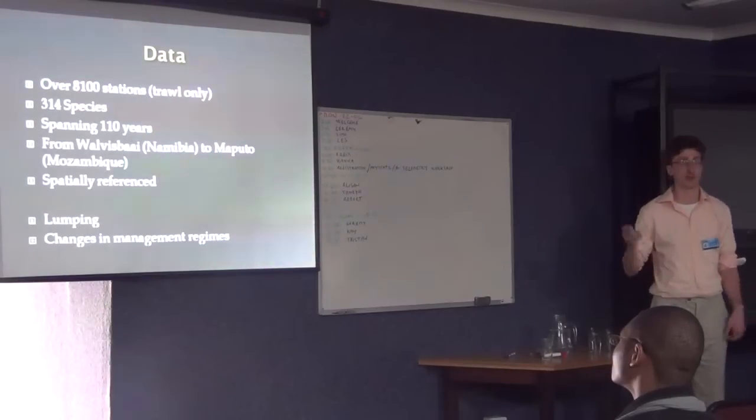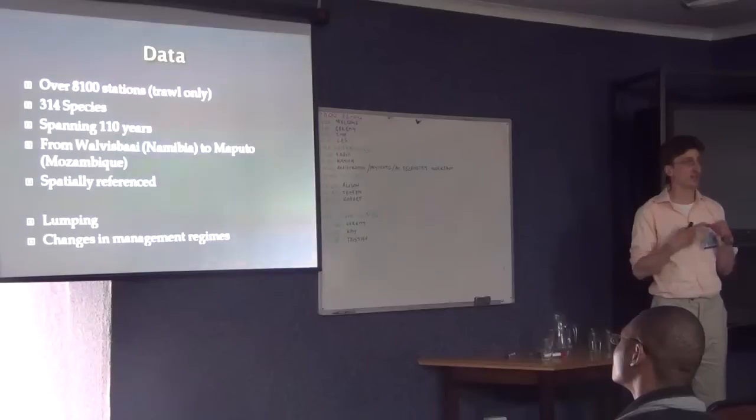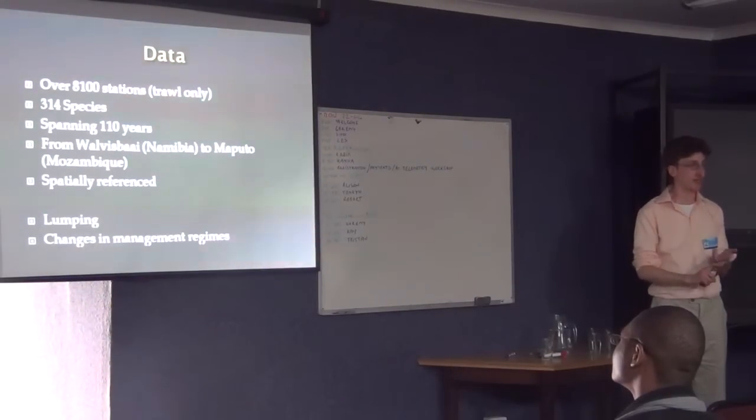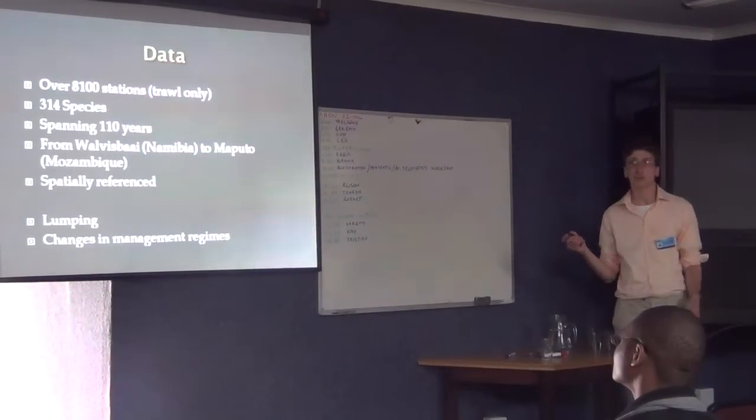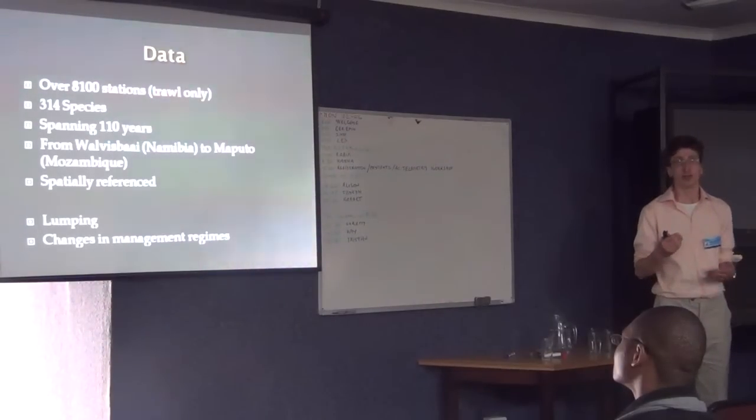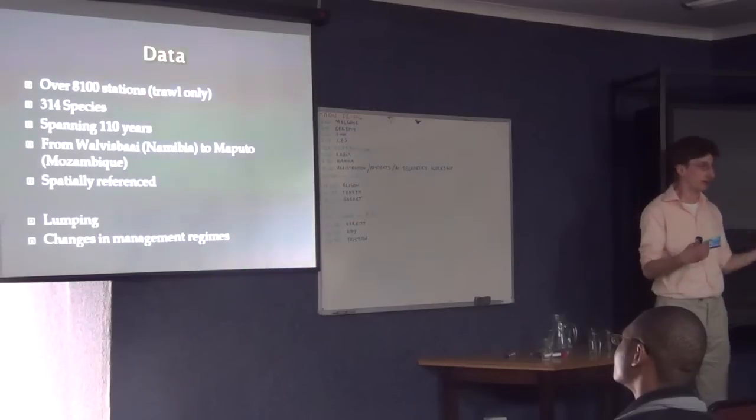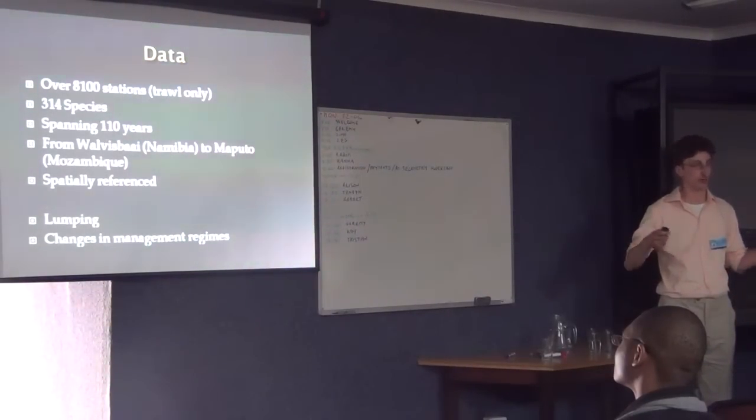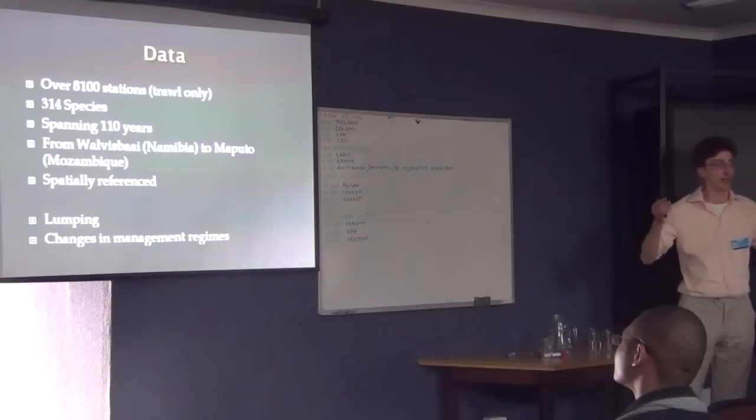Some challenges were taxonomic lumping in the surveys, primarily in the first historical survey and the observer database, but also changes in the management regimes. From 1933 onwards, the surveys took on more of a management nature rather than the exploratory nature. The upshot of that was that bycatch species were discarded, so I could actually only use data in the historical section up until 1933.